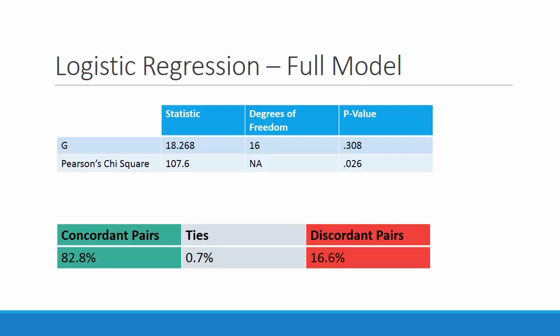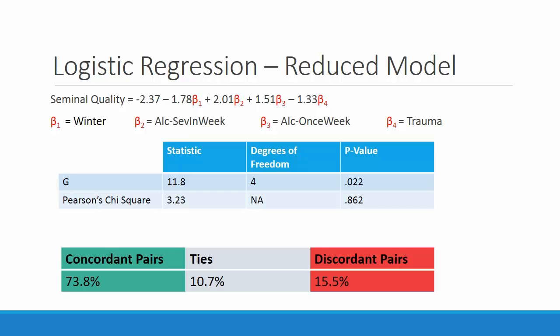However, as we note the concordant and discordant pairs, this model actually has a pretty high percentage of successful predictions. As we continued to find a more parsimonious model with a more comparable variable count to that of the CART analysis, we conducted many drop-in deviance tests. Finally, we arrived at this logistic regression model, which has four variables that were significant or very close to significance. This model has a p-value of 0.022, as well as a Pearson chi-square p-value of 0.862, which suggests that this has a good fit. However, the percentage of concordant pairs decreased from the previous full model's 82.8% to 73.8%, although it is important to keep in mind that this was a trade-off of having a simpler model.